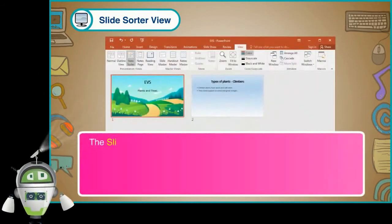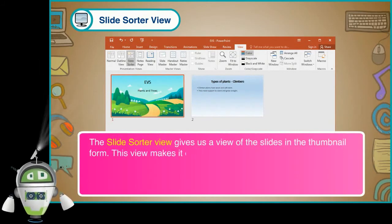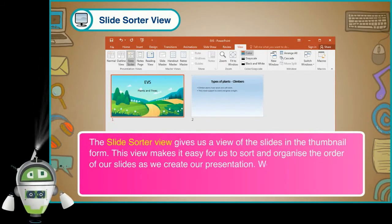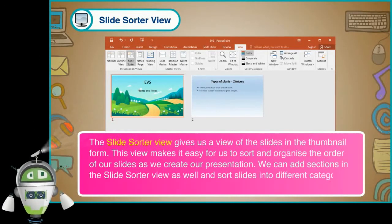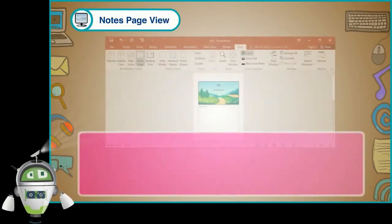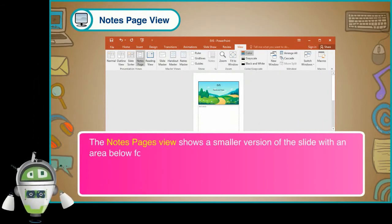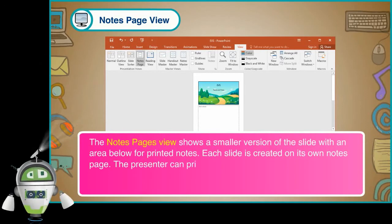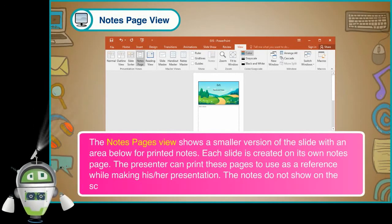Slide Sorter View: The slide sorter view gives us a view of the slides in thumbnail form. This makes it easy to sort and organize the order of our slides as we create our presentation. We can also add sections in the slide sorter view and sort slides into different categories. Notes Page View: The notes pages view shows a smaller version of the slide with an area below for printed notes. Each slide has its own notes page, and the presenter can print these pages to use as a reference. The notes do not show on the screen during the presentation.